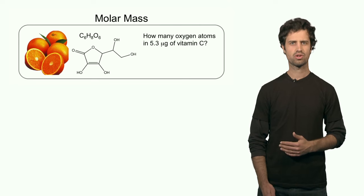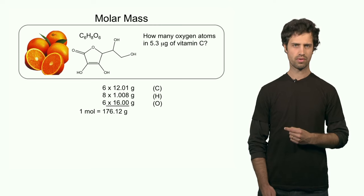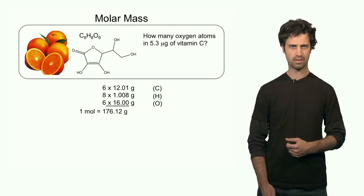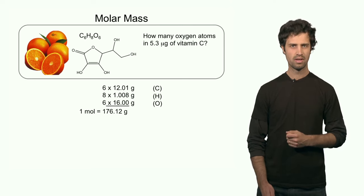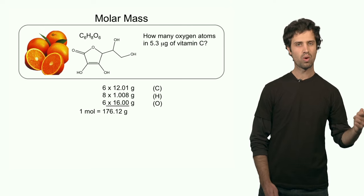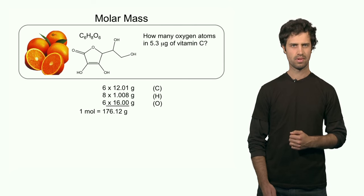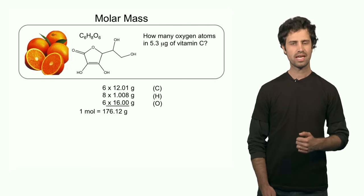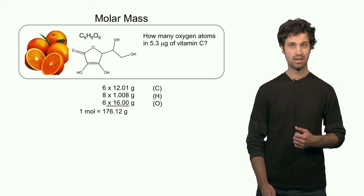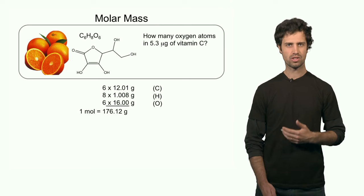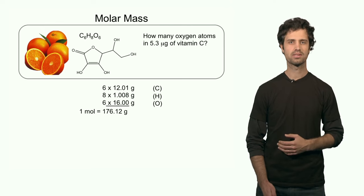The first step in this calculation is to determine the molar mass of the compound. I have 6 moles of carbon per 1 mole of the compound — 6 times 12. There are 8 hydrogens in the molecule, meaning 8 moles of hydrogen per mole — 8 times the molar mass of hydrogen. I also have 6 oxygen atoms — 6 times the molar mass of oxygen, which is 16. Adding up all these contributions, I find a total of 176.12 grams. That is the molar mass of vitamin C.